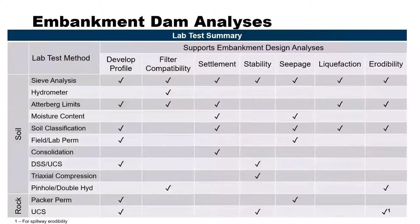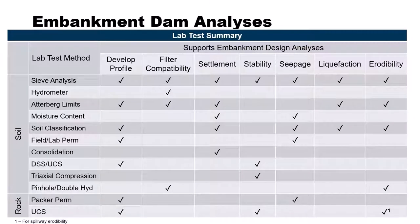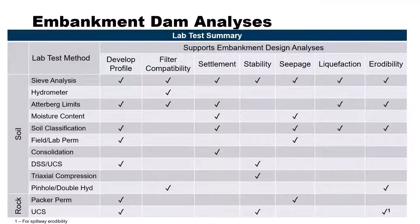This chart — put together by Greg — maps the tests we've covered on the Y-axis against the phase of embankment design on the X-axis where each is typically used. For example, sieve analysis is used across essentially all design phases; hydrometer testing is used primarily for filter compatibility and sometimes for seepage analysis. Erodibility tests apply not just within the embankment but also for spillway erodibility, where a UCS test and assessment of rock joint conditions would be appropriate. This chart serves as a useful road map.